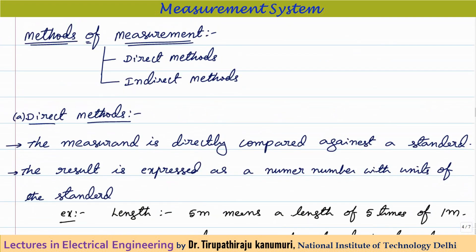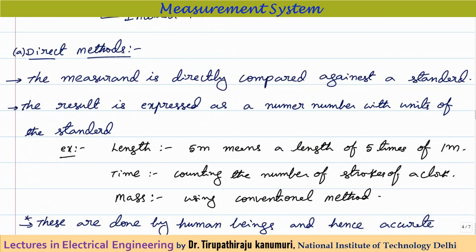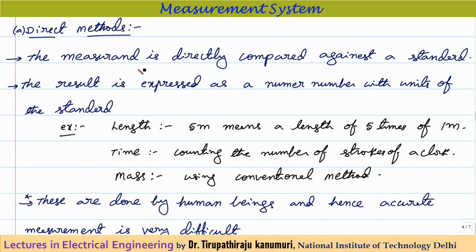The methods of measurement can be broadly categorized into direct methods and indirect methods. In the direct method, the measurement is directly compared against a standard and the result is expressed as a number with the units of the standard. Direct methods generally involve human beings — the standard is available and used to measure the required quantity.